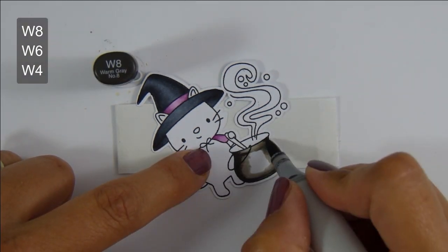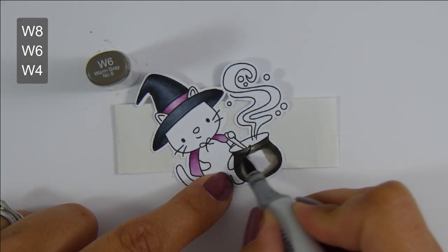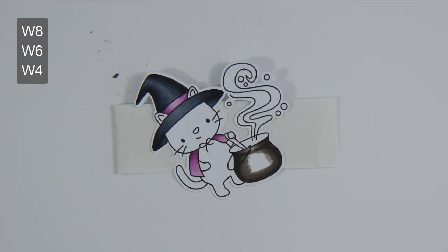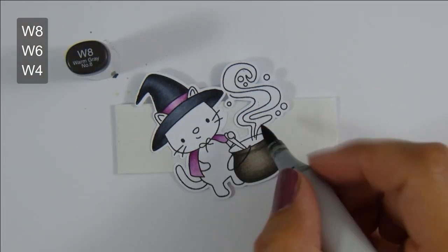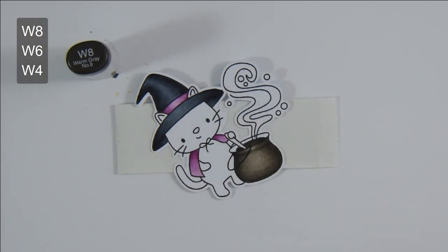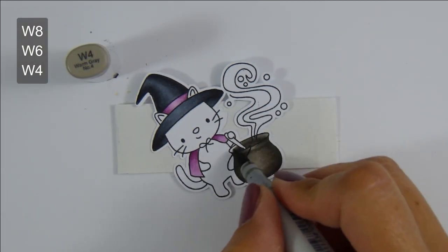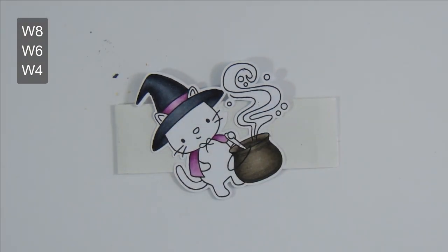And you will see where the vapors or smoke is coming up from the cauldron and in between my pussycat. I like that section to be cut out and show the background behind, so that's why I like using my Silhouette.